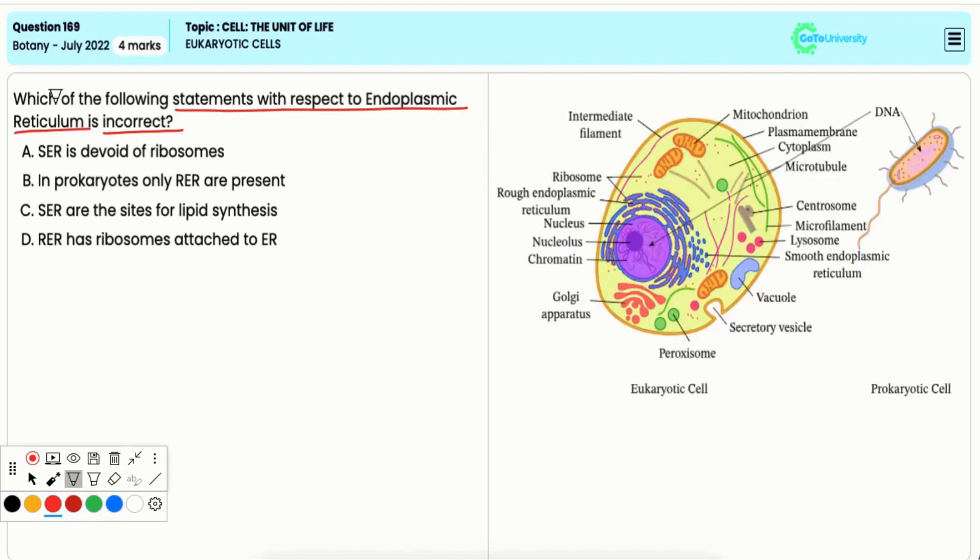Option A: SER is devoid of ribosomes. This is true. The smooth endoplasmic reticulum, that is SER, lacks ribosomes on its surface, making it smooth.